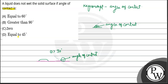So let's see what happens in this case. The angle is like this. The angle of contact is theta less than 90 degrees when it wets the surface. But our question asks when the solid surface is NOT wet — that is when the angle of contact is greater than 90 degrees, which is option B. I hope you understood well.